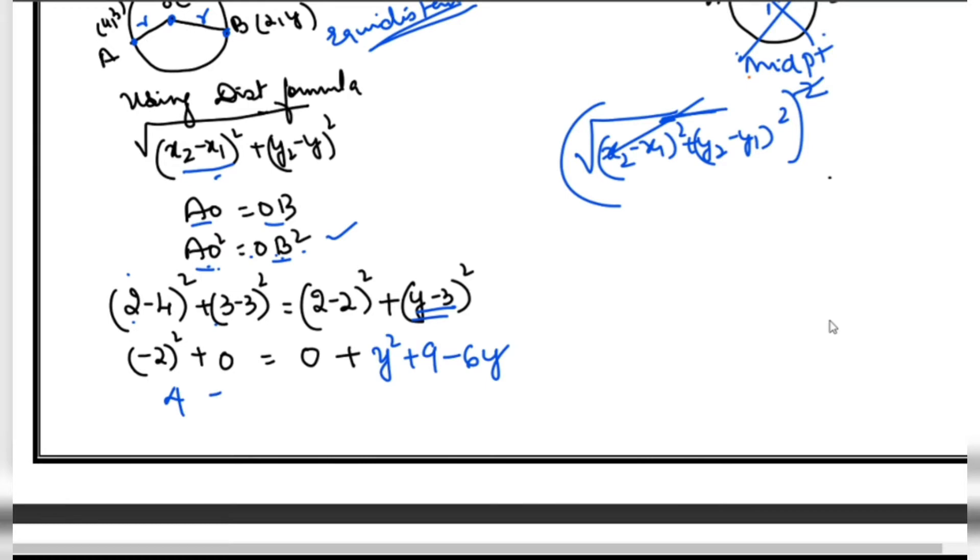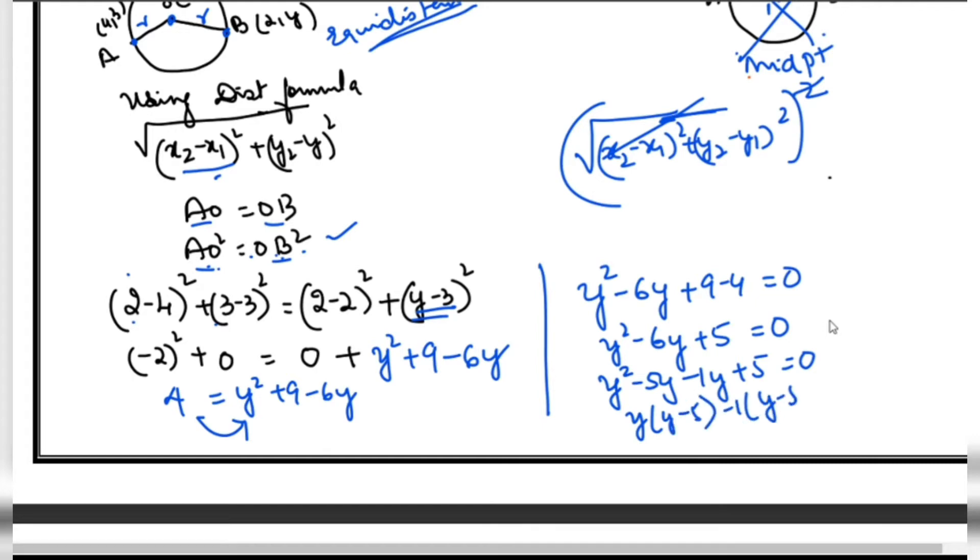So we get 4 equals y² + 9 - 6y. Therefore y² - 6y + 5 equals 0. Factors are 5 and 1: (y-5)(y-1) equals 0. Therefore y equals 5 or y equals 1. Both answers are allowed. In coordinate geometry, positive or negative values, both are valid.